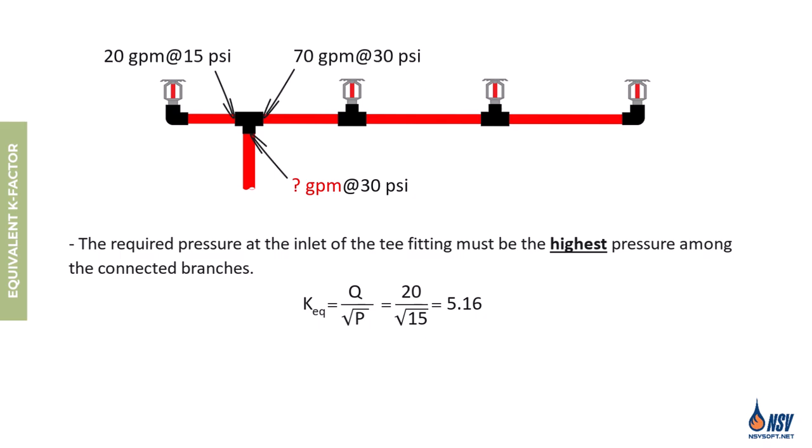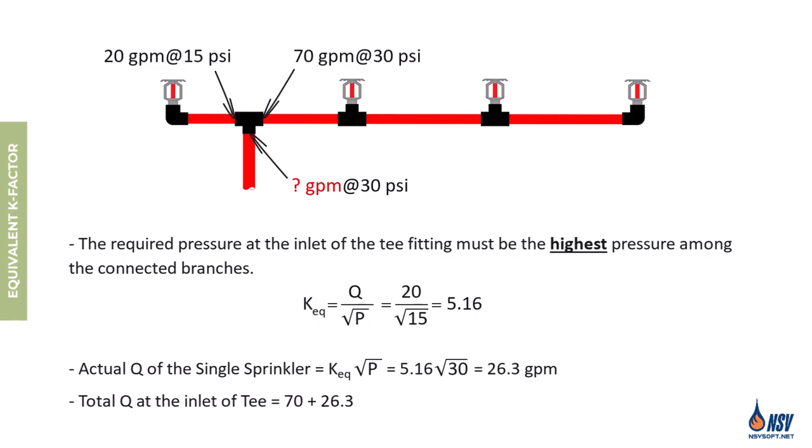Now that we've determined the equivalent K factor of that section and we're supplying 30 psi at the tee inlet, the actual flow rate of the single sprinkler will be approximately 26.3 gallons per minute. This means the sprinkler will discharge more than the originally required 20 gpm due to the higher supplied pressure. Therefore, the total required flow rate at the inlet of the tee is 70 + 26.3 = 96.3 gallons per minute.